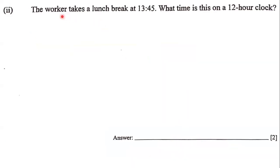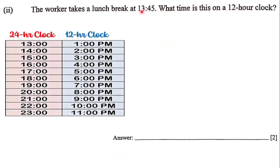The next question states that the worker takes a lunch break at 13:45. What time is this on a 12-hour clock? We have 13:45 expressed in the 24-hour clock. On a 12-hour clock, 13 o'clock is actually 1 p.m. So if he took his lunch break at 13:45, expressed on the 12-hour clock, that time is 1:45 p.m. And that's the answer to this question.